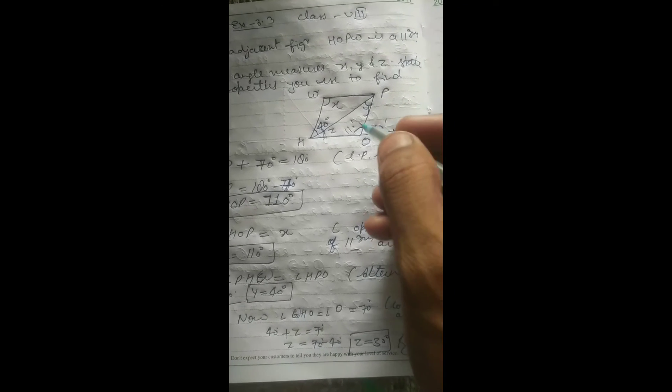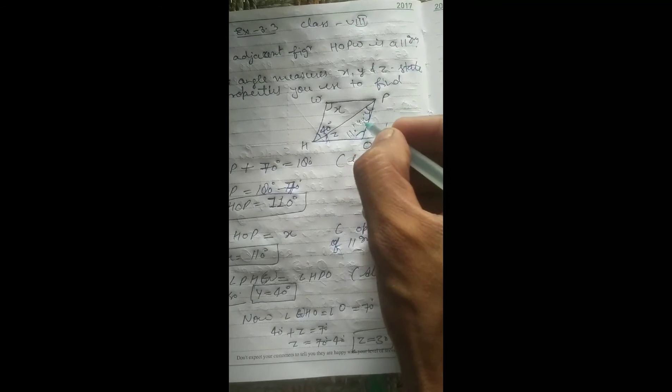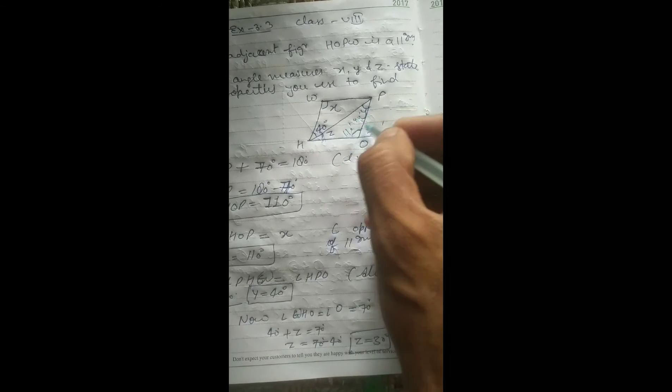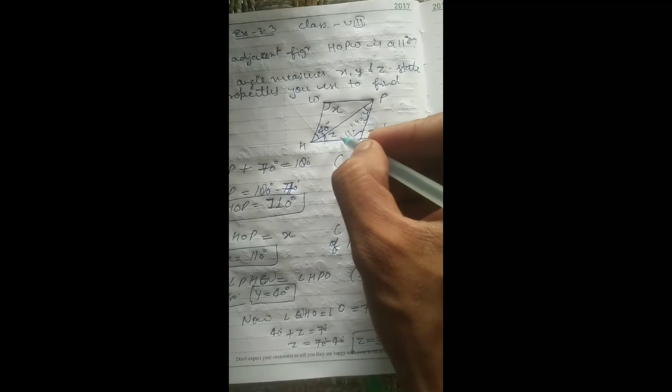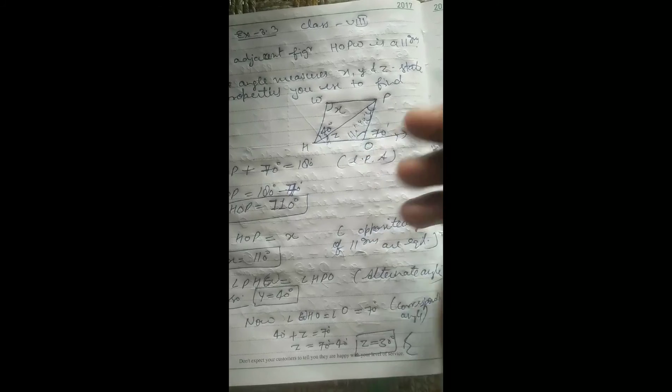Otherwise you can find angle P's value which is 40 degrees. 40 and 110 equals 150. Sum of all angles of a triangle is 180 degrees, so angle z equals 180 degrees minus 150 degrees, z equals 30 degrees.